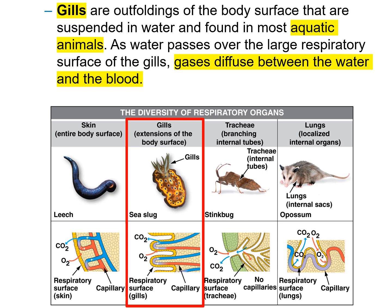Gills are outfoldings of the body surface that are suspended in water and found in most aquatic animals. As water passes over the large respiratory surface called the gills, gases will diffuse from the water into the blood and from the blood into the water. This is how fish and sharks are able to get the appropriate gases they require.